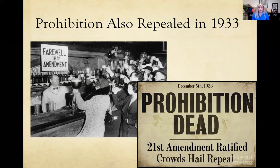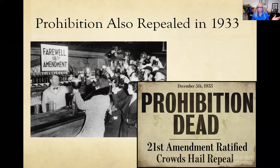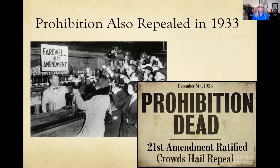Also in 1933, Prohibition was repealed. The 18th Amendment had banned alcohol in the early 1920s. You can't just ignore an amendment — you need another amendment to cancel it. The 21st Amendment brought alcohol back legally to the United States. Importantly, alcohol could now be taxed, which helped curb organized crime and re-channeled legal production of alcohol into something that generated tax revenue.